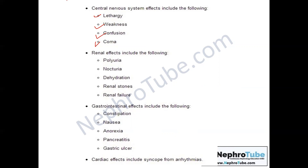Regarding the renal effect of hypercalcemia, you will find polyuria and nocturia, because calcium ions, like potassium ions, are involved in the action of ADH at the cellular level. Dehydration results from the polyuria and nocturia, and there may also be renal stones and eventually renal failure.